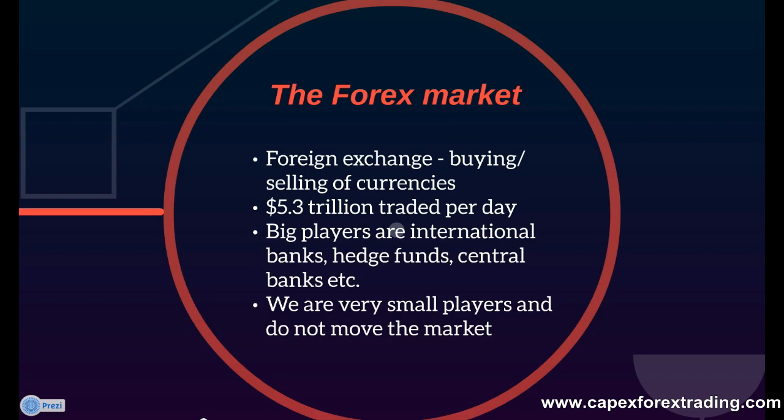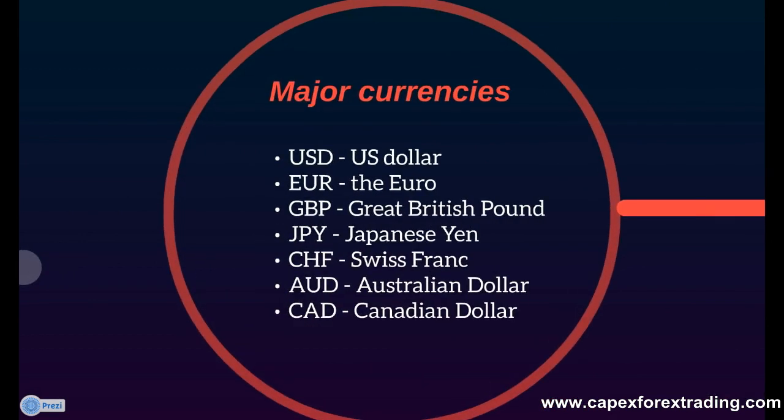Now there are many currencies available to trade in the forex market, but there is also a list of seven major currencies that you should bear in mind when you trade. They are the US dollar, the euro, the Great British pound, the Japanese yen, the Swiss franc,